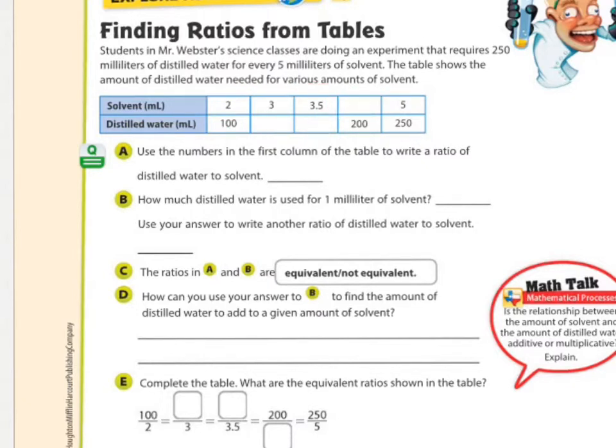Use the numbers in the first column. Wait, I didn't mean to get rid of this. I just wanted to clean up the work. That was 4, this was 175. Use the numbers in the first column of the table to write a ratio of distilled water to solvent. This is the first ratio. So we would say 2 to 100, or we could say it like this, 2 to 100. You say it the same way but you write it differently. These all mean the same thing, 2 to 100.